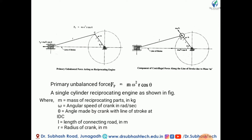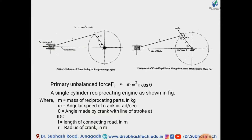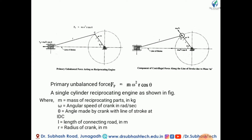In a simple way, partial balancing means we are not going to achieve 100% balancing; we only obtain a partial balancing — that means we balance in such a way that we obtain our desired output. If we imagine that a mass m is attached at the crank pin, then because of this mass some centrifugal force m·ω²·R acts, having two components: m·ω²·R·cos θ along the line of stroke, and m·ω²·R·sin θ perpendicular to it. So m·ω²·R·cos θ is the primary unbalanced force.